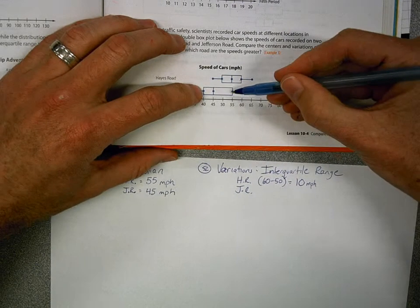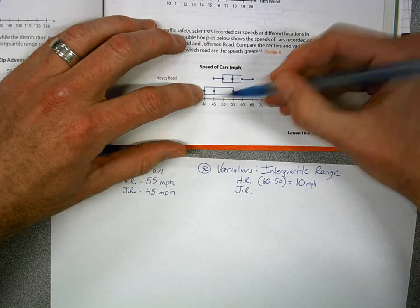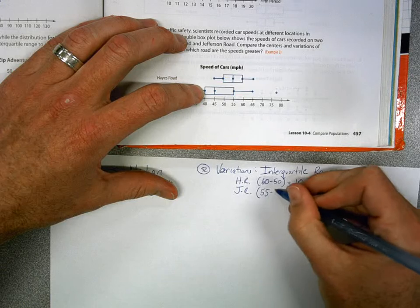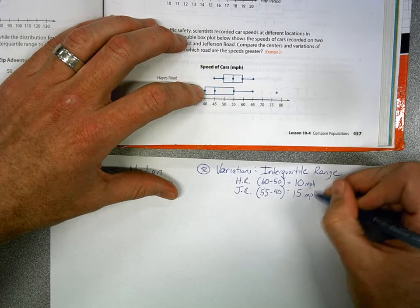And Jefferson Road, same idea. First quartile and third quartile, so the ends of the box, 40 and 55. So to find the distance there, of course, you find the difference. And that gives us 15 miles per hour.